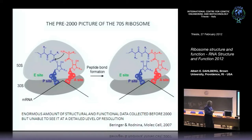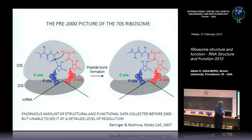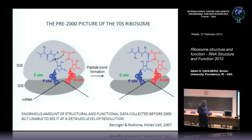If the base pairing is correct at the codon-anticodon, the signal is sent from the 30S subunit to the 50S subunit indicating: we're going to take this tRNA and add the amino acid at the three prime end into the growing peptide. Now we transition to discussing an enormous amount of data collected over the last 45 years about ribosome structure and function. I'll use the year 2000 as a transition point, when crystal structures of the ribosome appeared and gave us precise structural information.